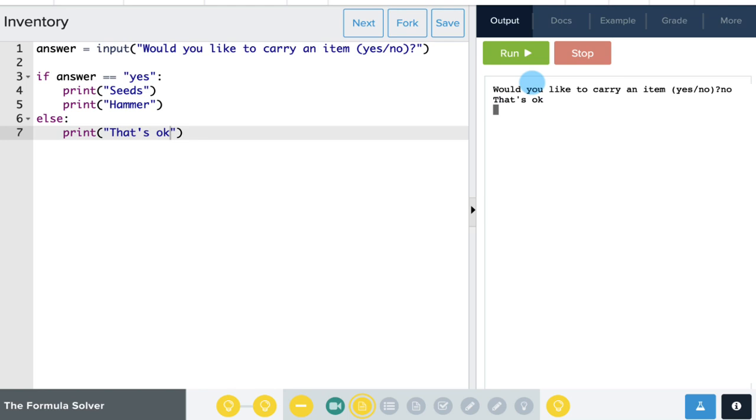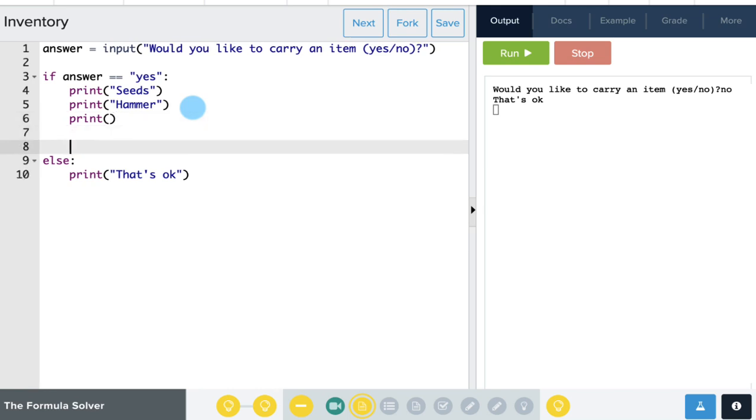Okay, let's make this a little bit more interesting. Let's have the user, after printing the menu, choose which of the two items that they'd like to carry. So let's create a little bit of space.